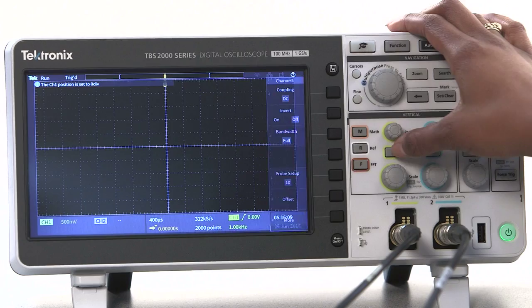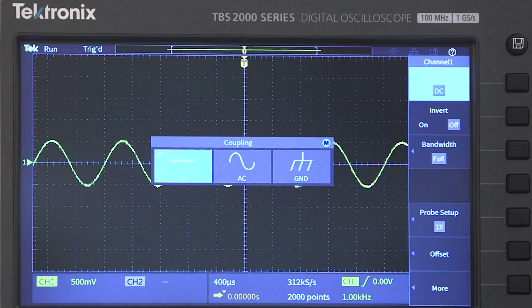Coupling is a useful vertical setting. It defines the way the signal is connected to the oscilloscope input.